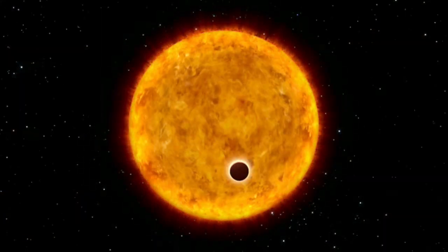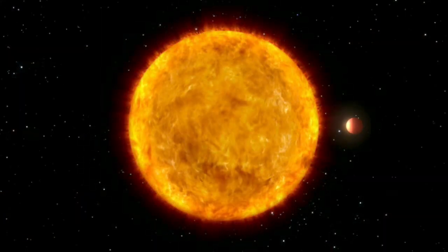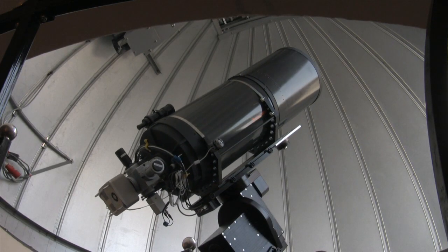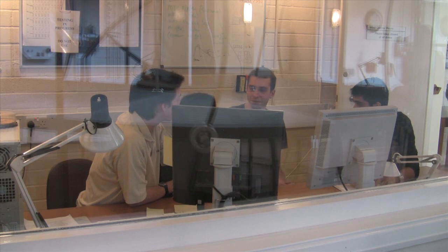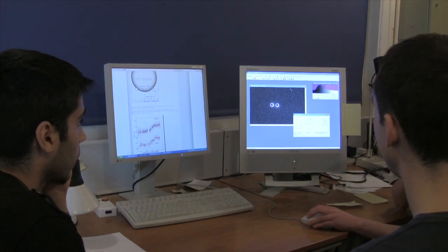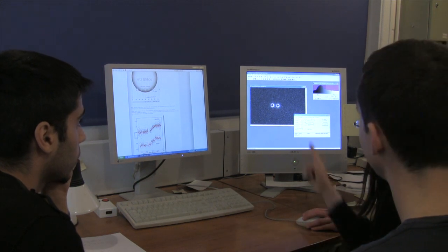The planet the students observed, coming under the moniker HD 80606b, was already known to astronomers, and its orbit is highly eccentric, bringing the planet as close as 4.5 million kilometres from its star and then back out again every 111 days.